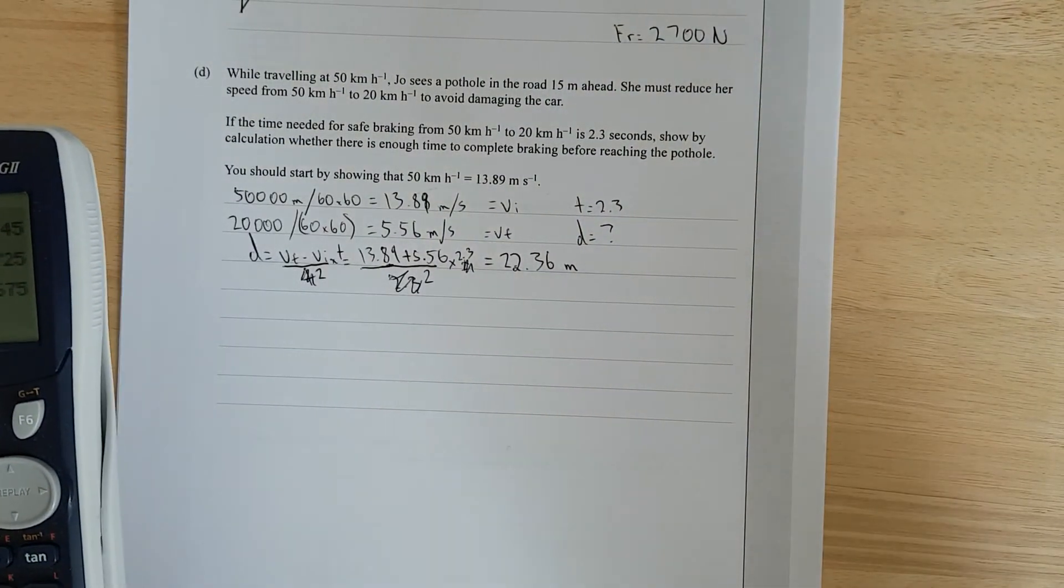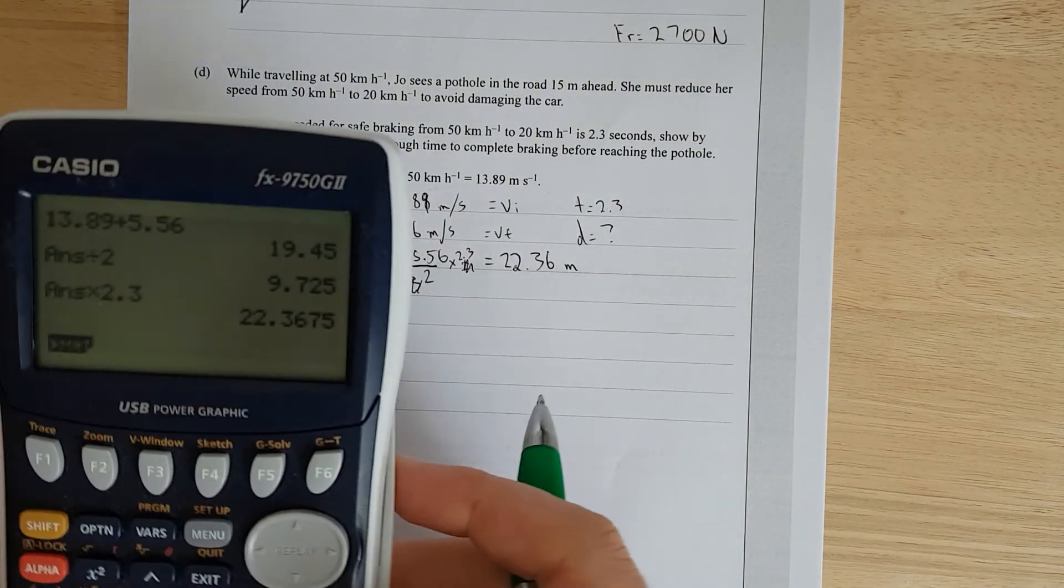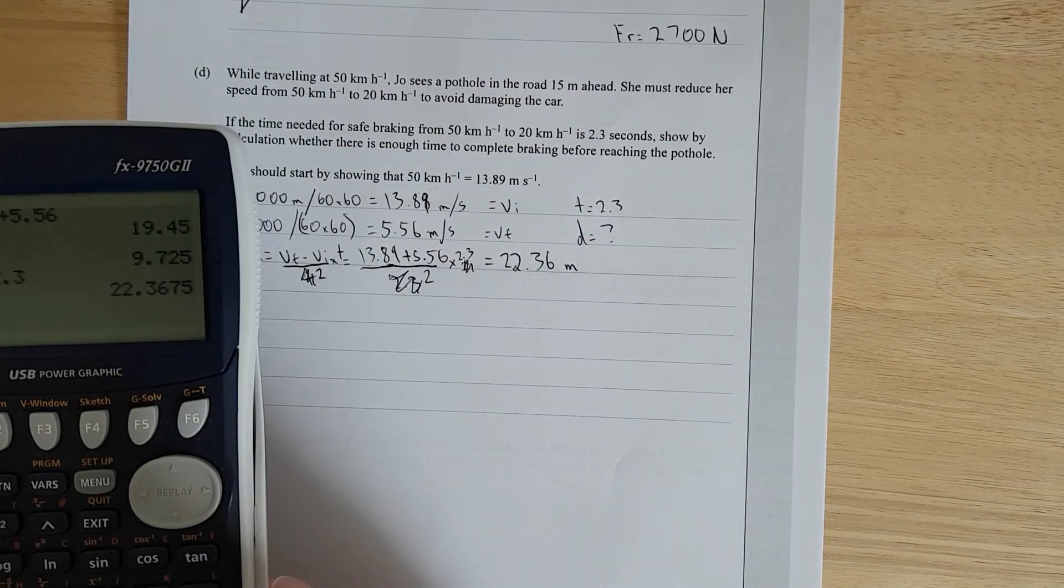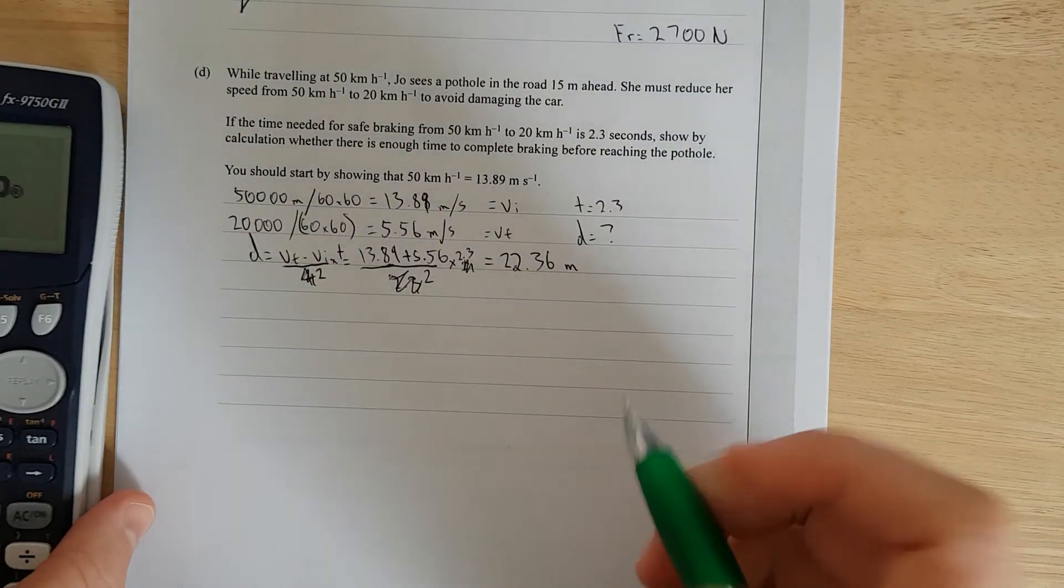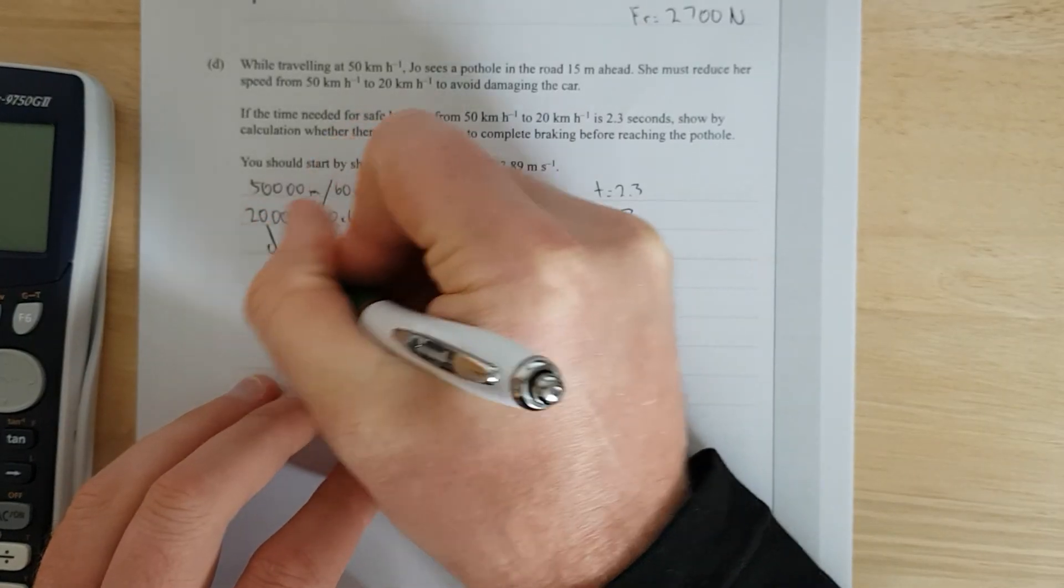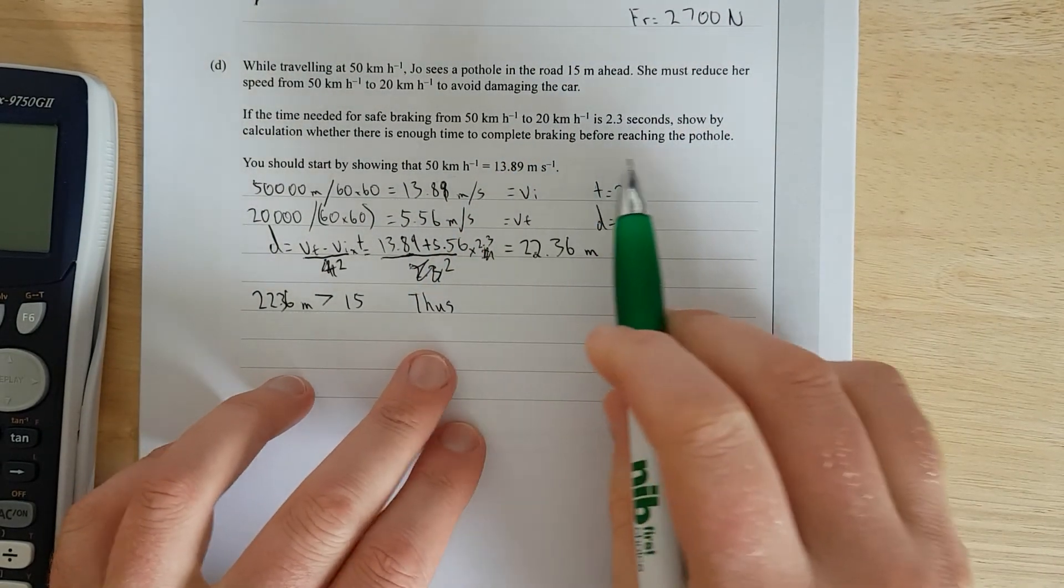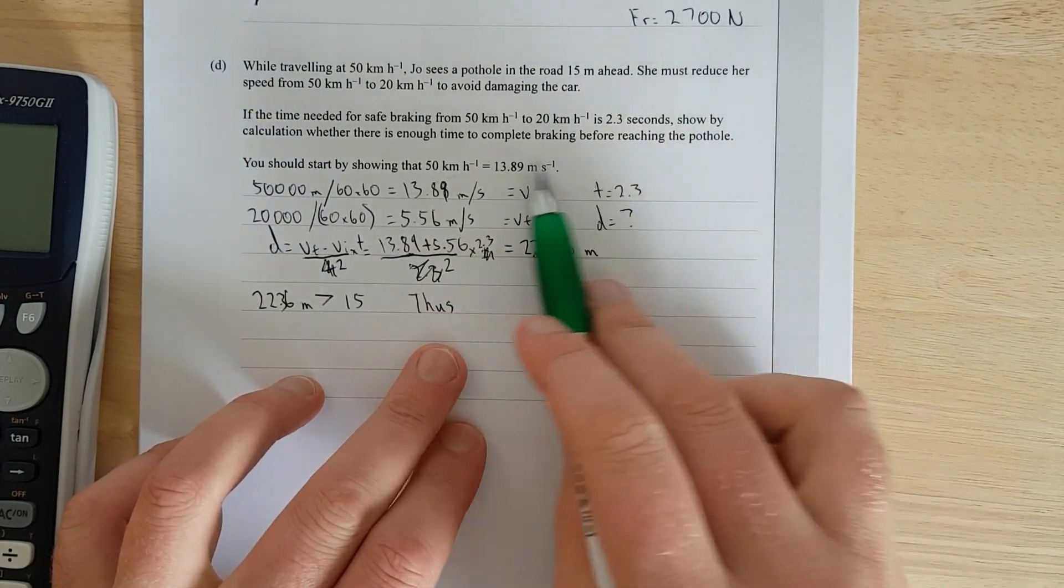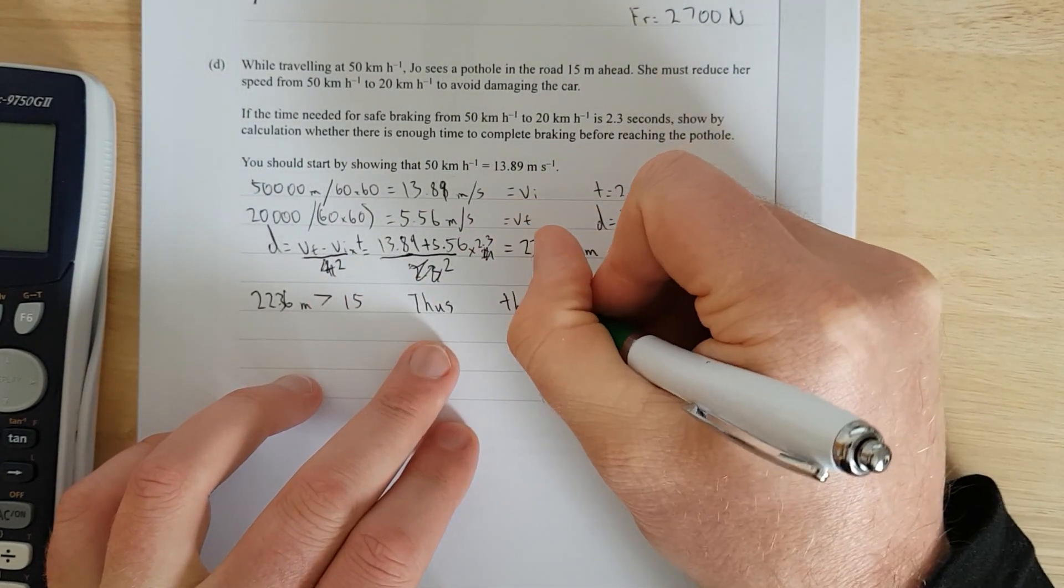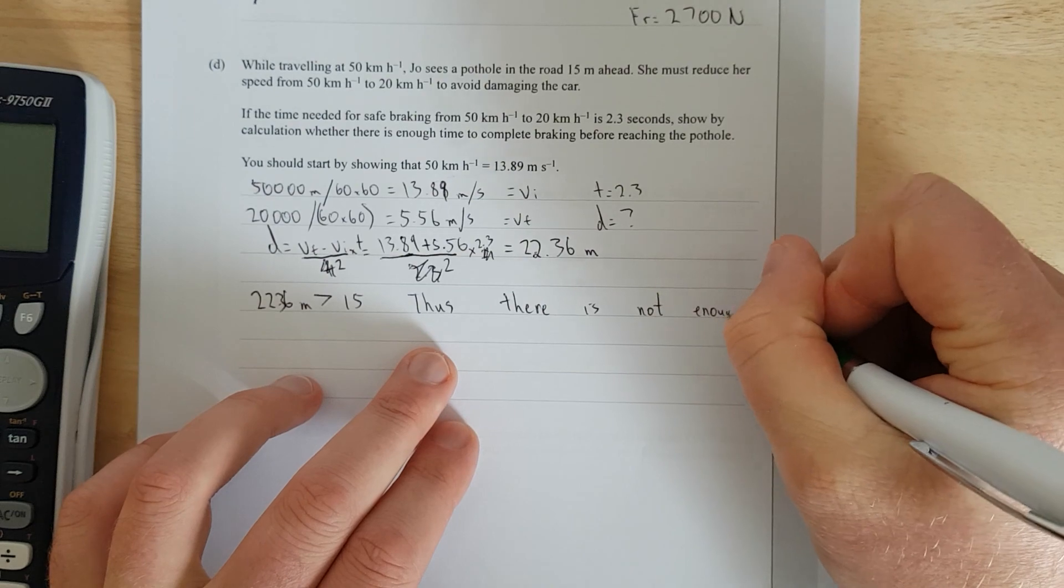If you want to know how I do these videos, normally I do the exam first. But when I'm talking as I do it, I tend to jumble myself up. So 22.36, that's way more than 15. 22.36 meters is bigger than 15, thus there is not enough time.